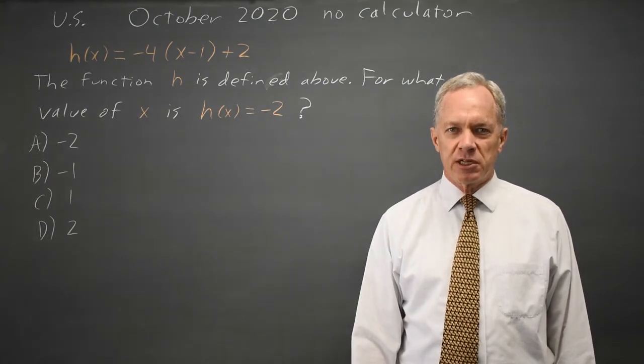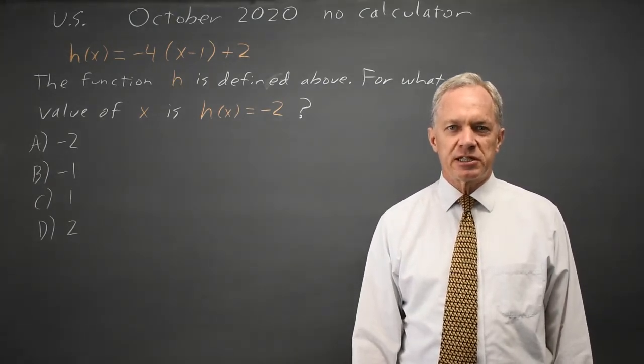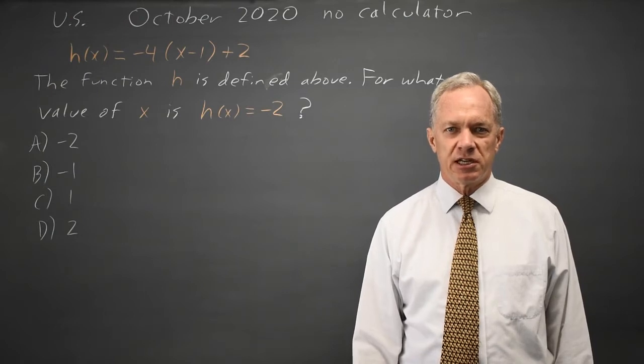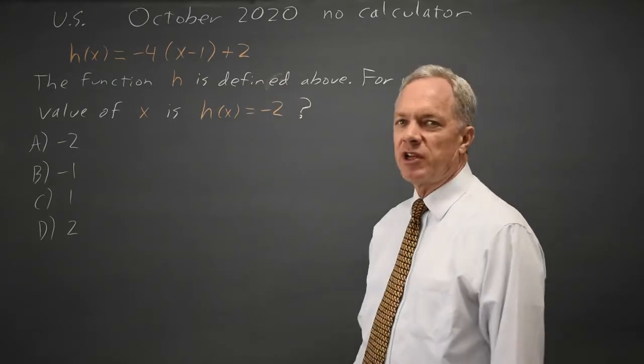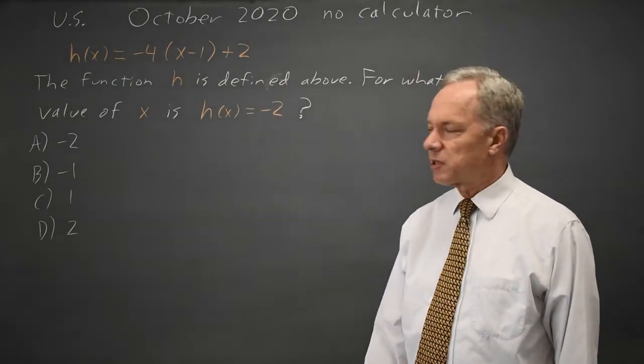This is from the October 2020 U.S. SAT. College Board is asking us to use the functional notation h(x) again. In this case, they give us a linear function and ask for what value of x is that function equal to negative 2.